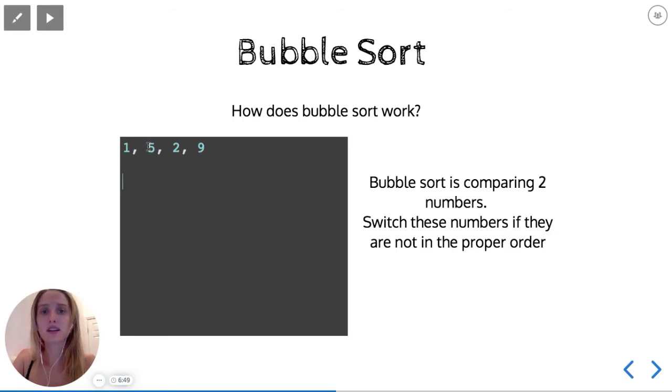Then the Bubble Sort algorithm is going to go over to 2 and say, okay, is 2 greater than or less than this number on the left, which is 5? 2 is less than 5, so these numbers are going to swap. So now we'll have 1, 2, 5, and 9.